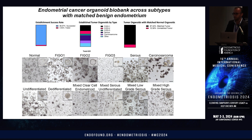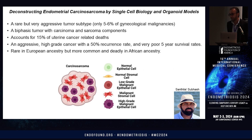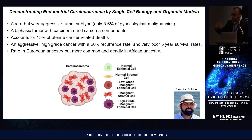To understand functionally how these mutations influence disease, we developed organoids from matched normal tissue and different subtypes of endometrial cancer, including rare subtypes. One of these rare subsets is carcinosarcoma — important to highlight for the endometriosis crowd because it is similar in nature. It is a cancer type that harbors both carcinoma, meaning epithelial cells that have undergone oncogenic transformation, and sarcoma. We wanted to study this disease because it is one of the most deadly types of endometrial cancer, has a biphasic nature, is rare in European ancestry, but much more common and deadly in African ancestry.